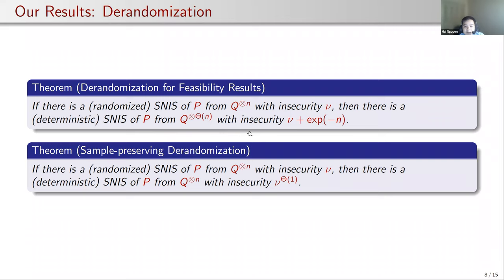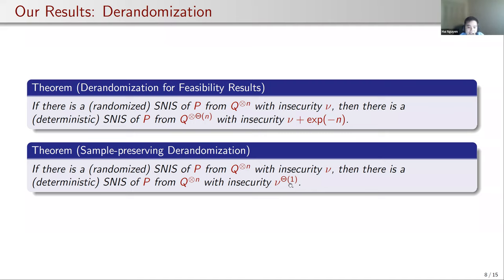However, this de-randomization result did not suffice to study the rate, because it doesn't preserve the number of samples — it uses more samples. So we also prove that it is possible to de-randomize the constructions using the same number of samples, but with slightly higher simulation error. The constant here is typically half, so we can achieve a simulation error of square root of nu if the original randomized construction achieves simulation error nu.